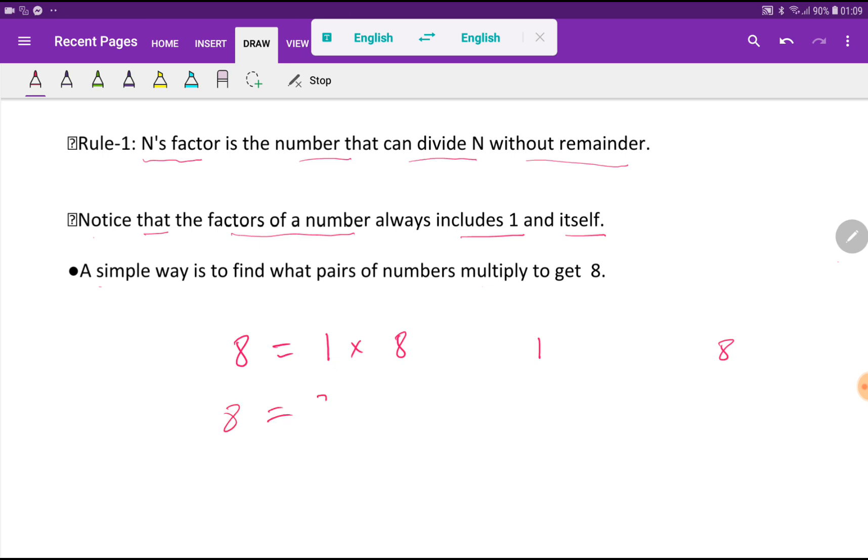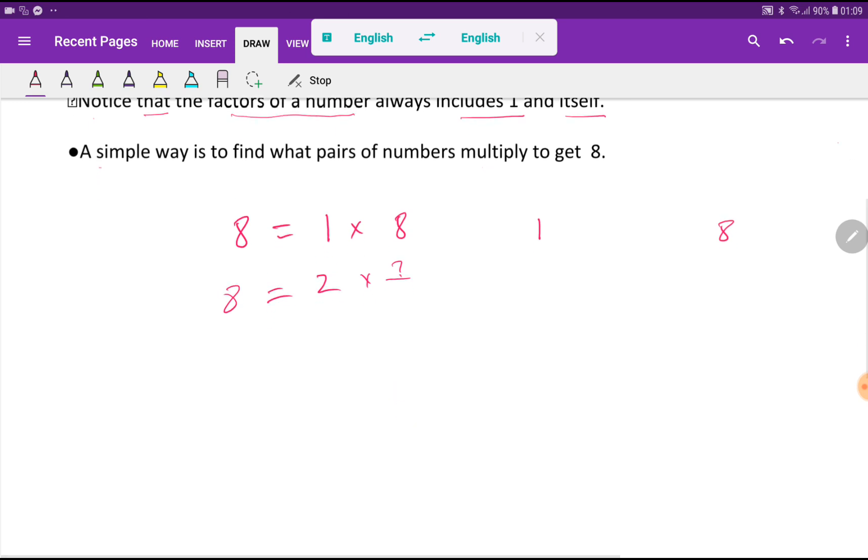Now what will I do? I will take 2. So what number will come here? To find out this number, you have to check whether 8 is divisible by 2 completely or not. So look at here. If you divide 8 by 2, you will get 4 as a quotient. So if you multiply 2 times 4, that will give you 8.